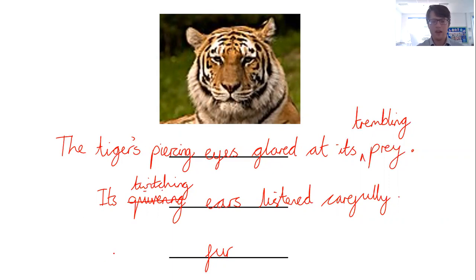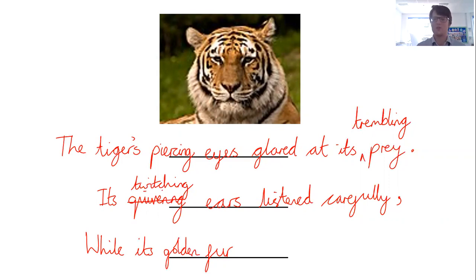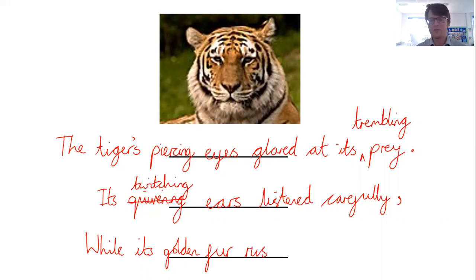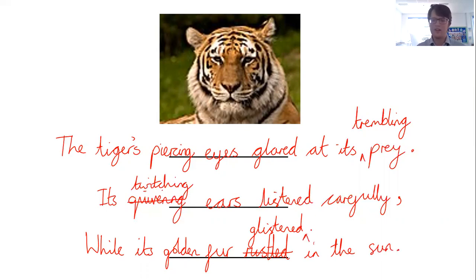And then something about its fur. I'm going to turn this into a comma. How could I describe it — stripy fur, golden, soft, fluffy? I quite like 'golden' — I want this tiger to appear quite majestic and powerful. While its golden fur... what could the fur be doing? Flowing in the breeze, rustled... I've already used 'twitch,' so maybe: while its golden fur glistened in the sun. Could I add a simile? Glistened like a diamond, like a jewel, like a pearl... I'll go with 'diamond.'